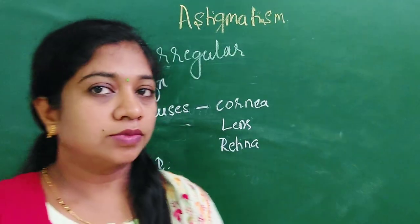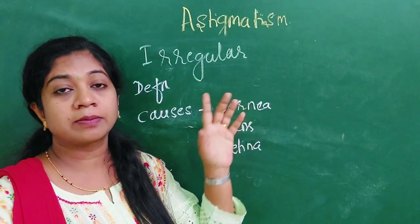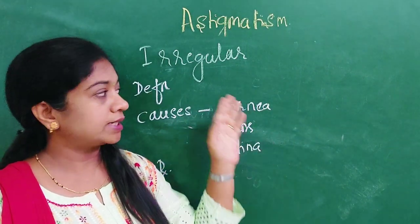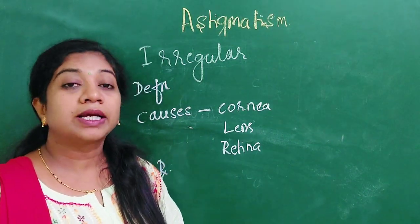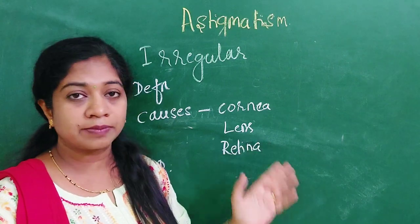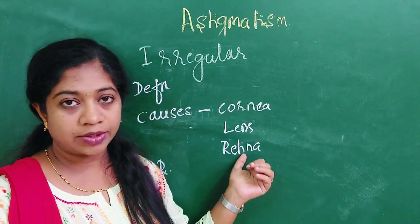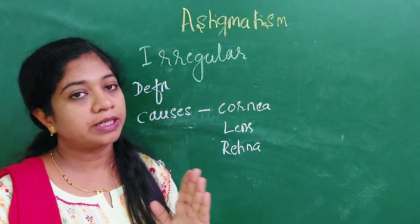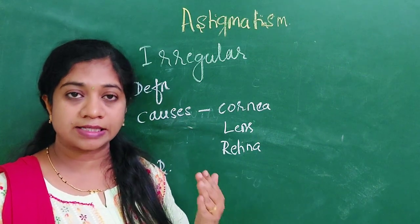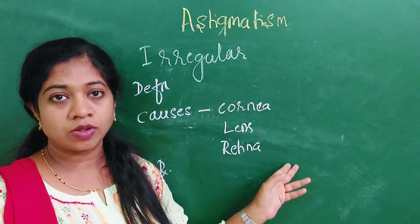Moving on to irregular astigmatism. Unlike regular astigmatism which has just two principal meridians, irregular astigmatism has multiple principal meridians and the change in refraction is not uniform across all meridians. Causes include corneal scarring following trauma, varied refractive index in the lens, and macular scarring or retinal tumors. Treatment options include optical treatment with contact lenses — which replace the irregular corneal surface with a uniform refracting surface — or surgical treatment with penetrating keratoplasty.